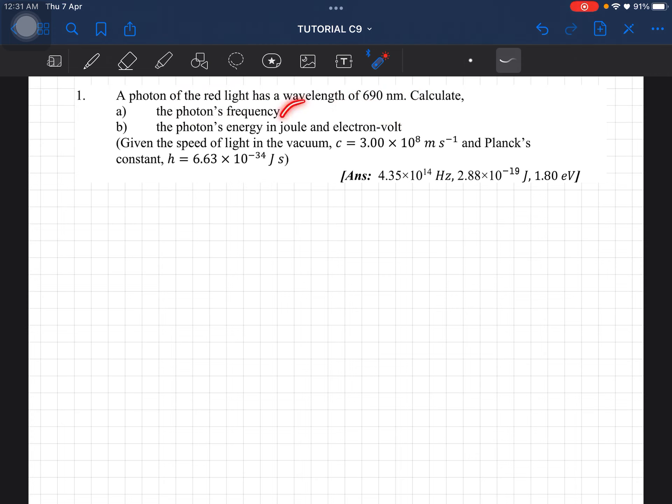A photon of red light has a wavelength of 690 nanometers. We have to calculate the frequency as well as the energy in joules and electron volts. I feel like I've discussed this in my examples, if I'm not mistaken, but let's just do it again.